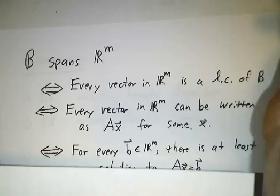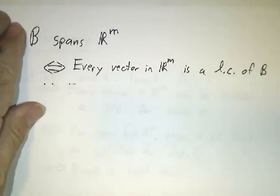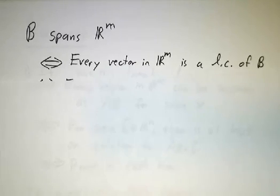Okay, that's linear independence. Now let's talk about spanning. The vectors span R^m if every vector in R^m can be written as a linear combination of them.